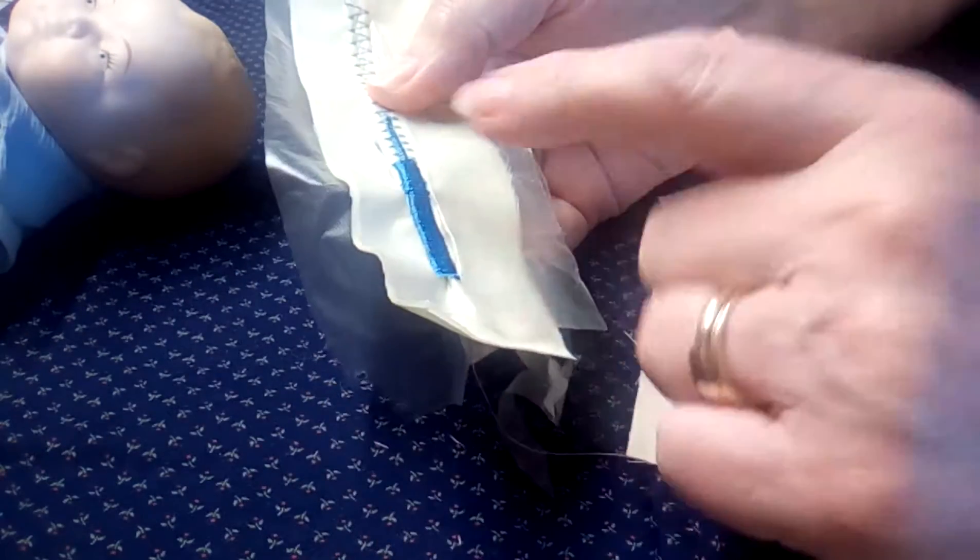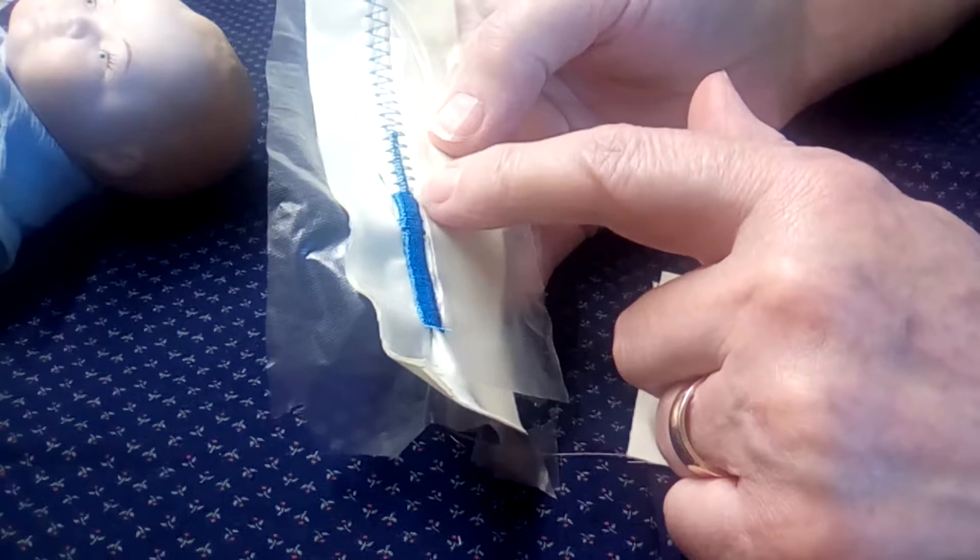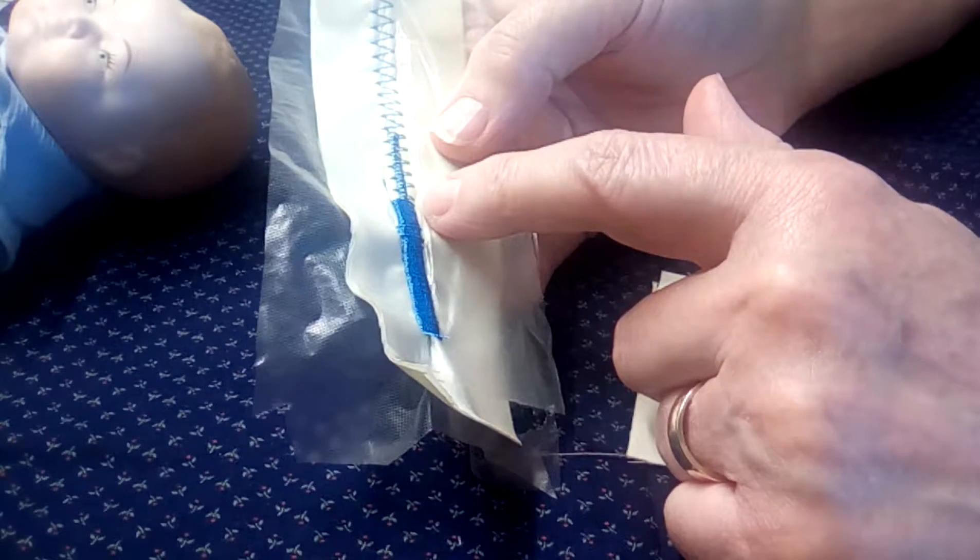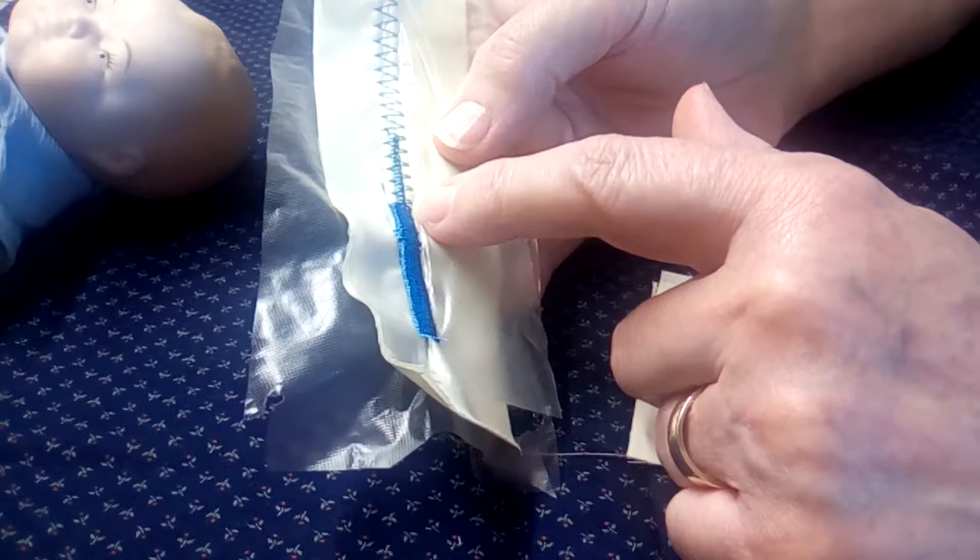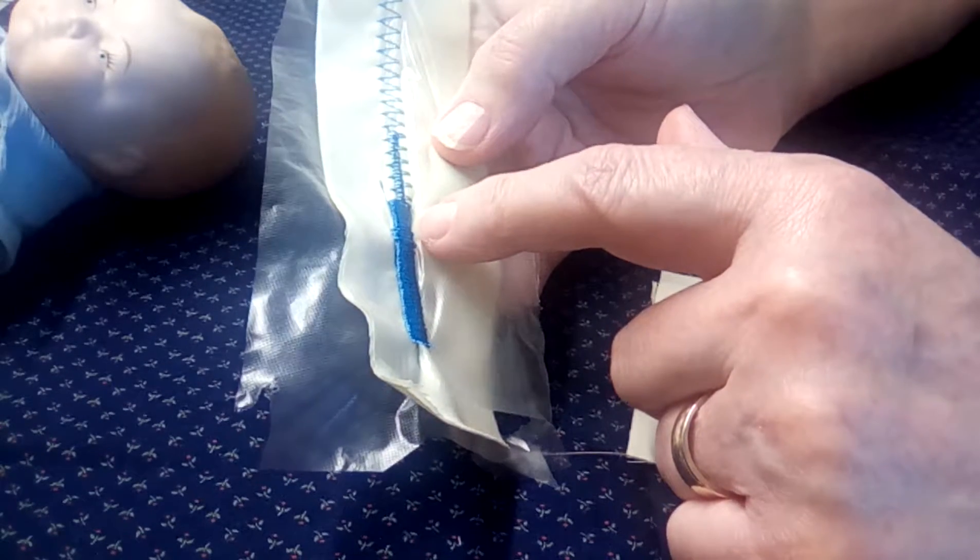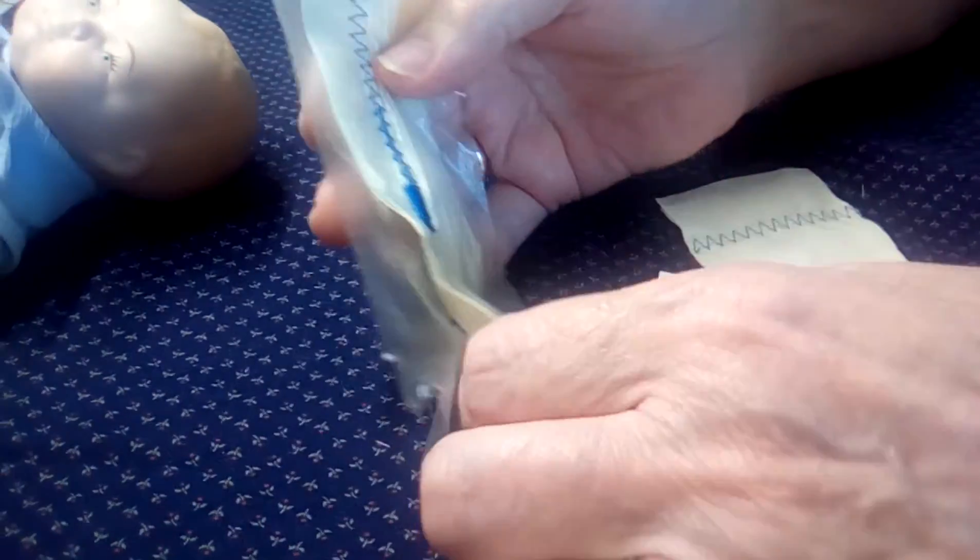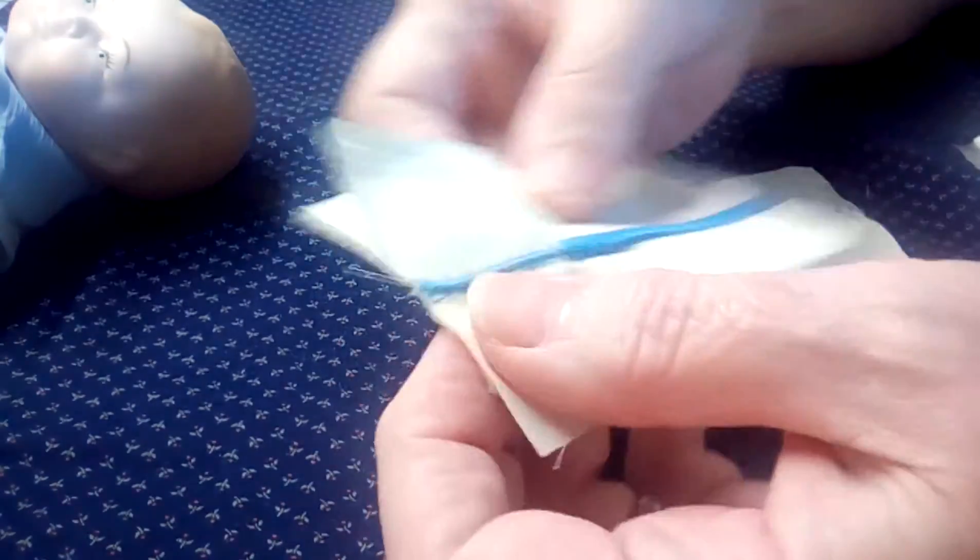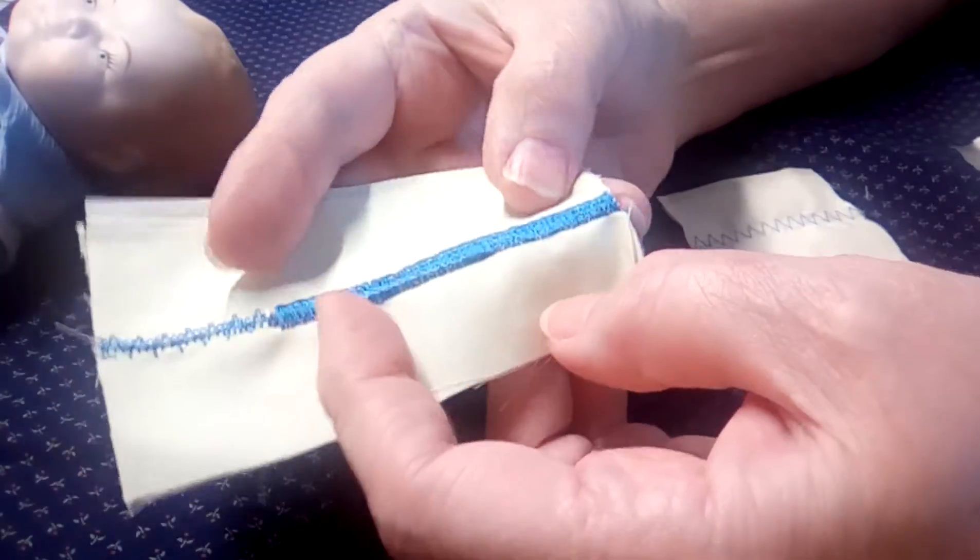over it with my satin stitch. I put my needle at the width at seven and my stitch length about three. And I find that it makes a very nice satin stitch.